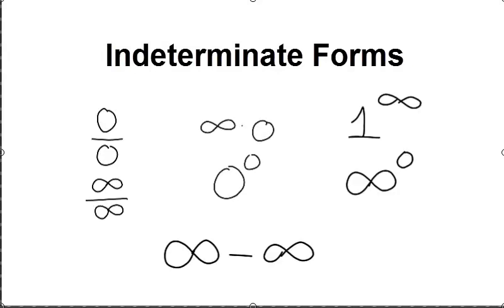There are other indeterminate forms as well, some of which we've seen and some of which we haven't. Each of these cannot be determined unambiguously, just like 0 over 0.